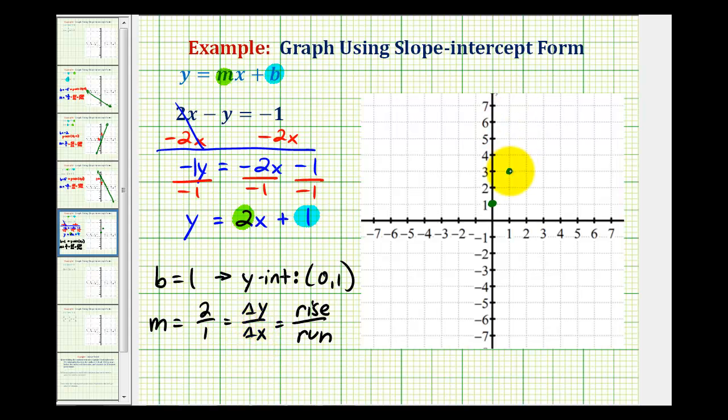And we can do this several times if we want, up 2, right 1, up 2, right 1. Notice how all these points fall on the same line. So the line y equals 2x plus 1 would look something like this.